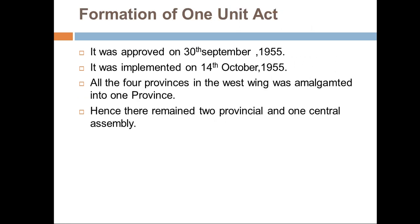Formation of the One Unit Act: it was approved on 30th September 1955 and implemented on 14th October 1955. All four provinces in the West Wing were amalgamated into one province.